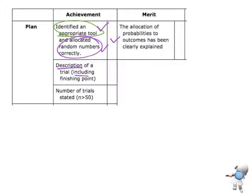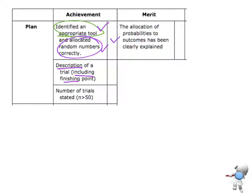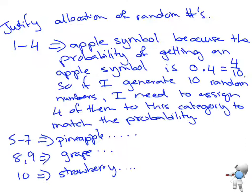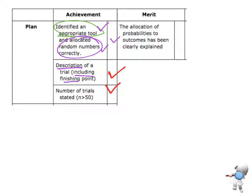The next requirement is a description of a trial that must include the finishing point. One trial is when I generate random numbers until either all four symbols are obtained, or until a maximum of 10 ice blocks are bought — so the end point is clearly stated. I've also stated that I'm going to do 50 trials, so I've completed all the requirements for achieved in the plan section.